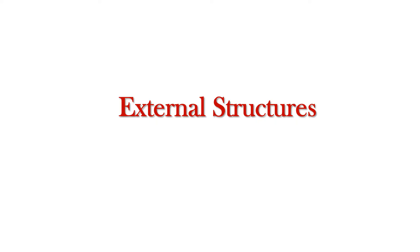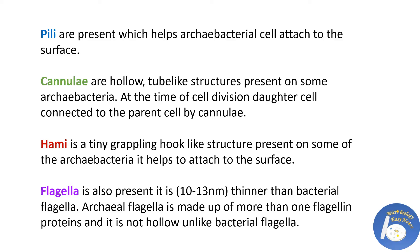Regarding external structures: pili are present, which help the archaebacterial cell attach to surfaces. Cannulae are hollow, tube-like structures present on some archaebacterial cells; at the time of cell division, the daughter cell is connected to the parent cell by cannulae. Hami are tiny grappling hook-like structures present on some archaebacterial cells that help attach to surfaces. Flagella are also present — they are thinner than bacterial flagella, made up of more than one flagellin protein, and are not hollow unlike bacterial flagella.